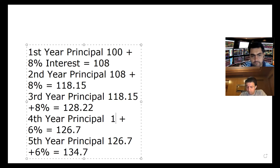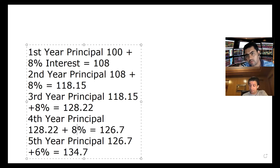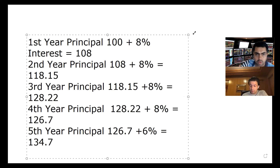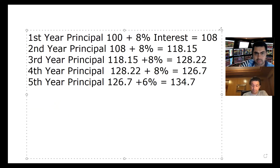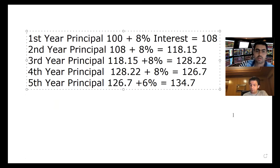Let's do the next one. What is the base principle for the 4th year? 128.22 plus 8%. The 4th year gives us 139. Now, 128.22 plus 8% is 139. And continuing on, at the 5th year, 136 gives 151.48.